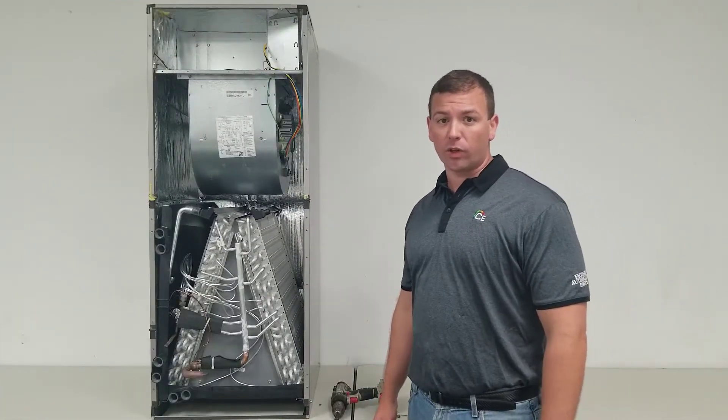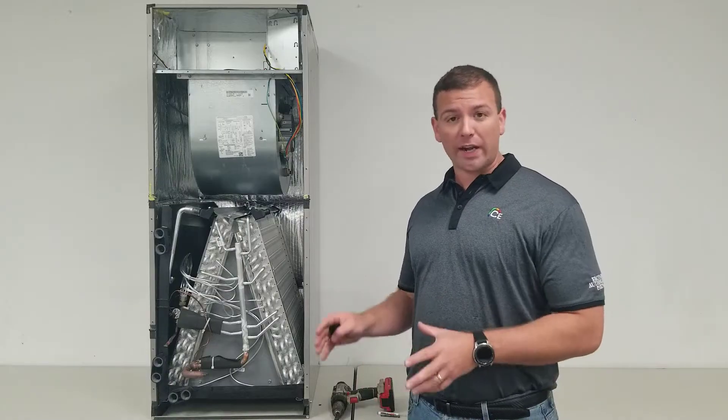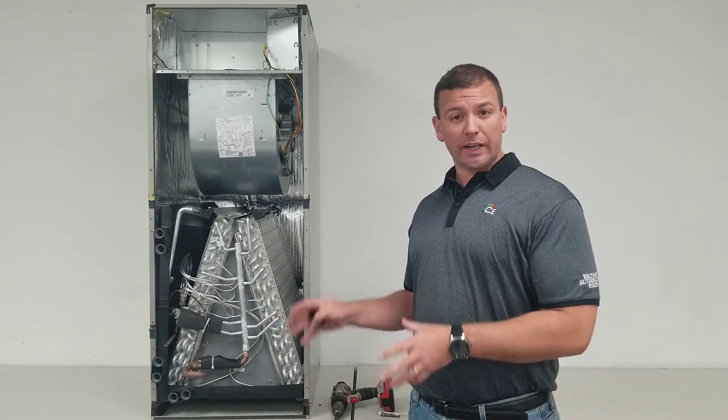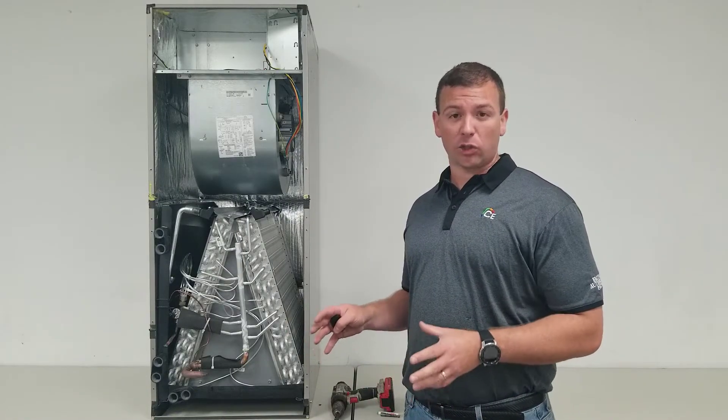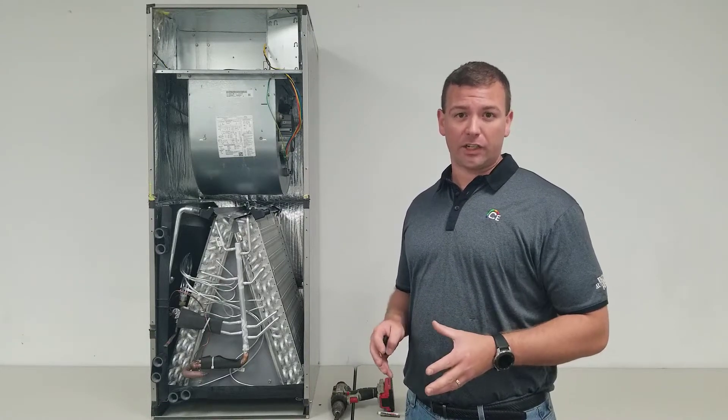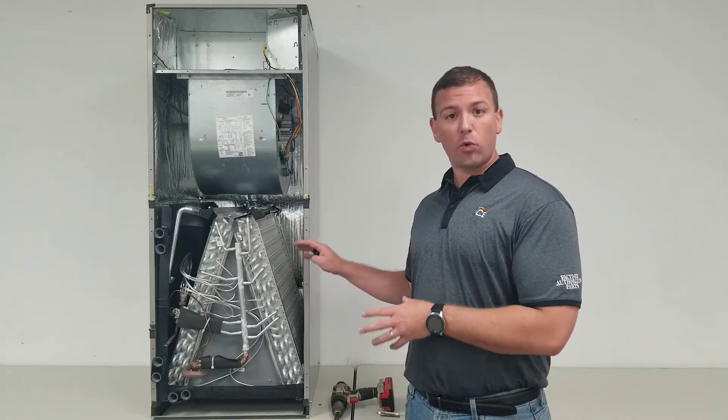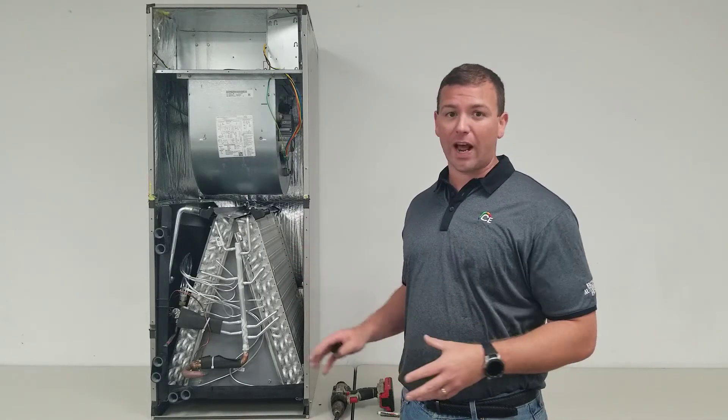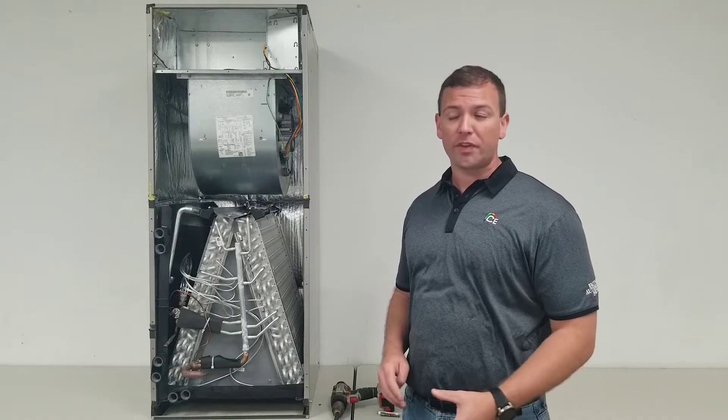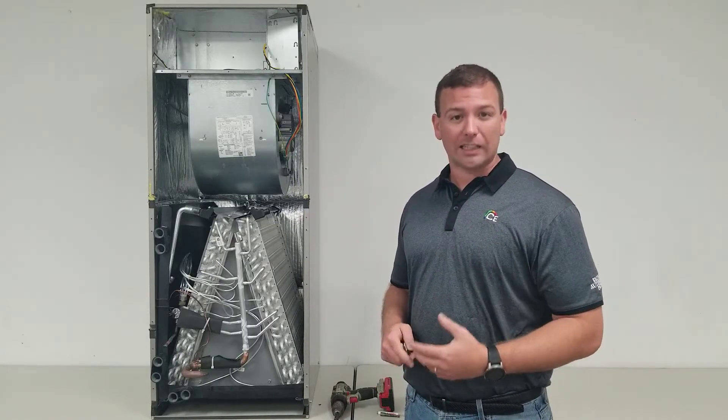One of this process will involve removing the coil. If possible, try to get this done before the air handler is installed in its location, which is probably going to be an attic installation. If you can get the horizontal right conversion done while the equipment is on the ground and not yet attached to the ductwork, it will be much easier and much more accessible.